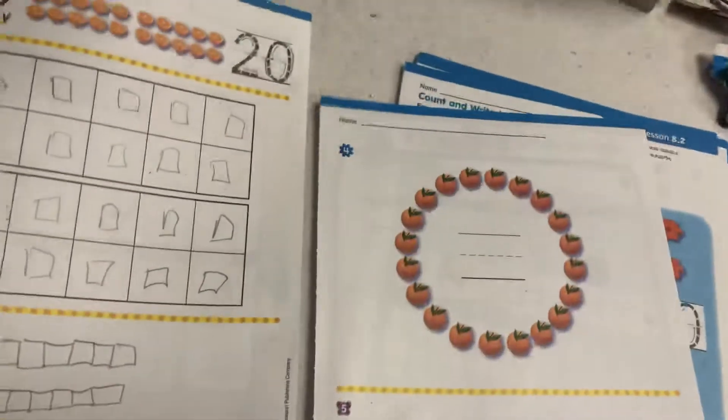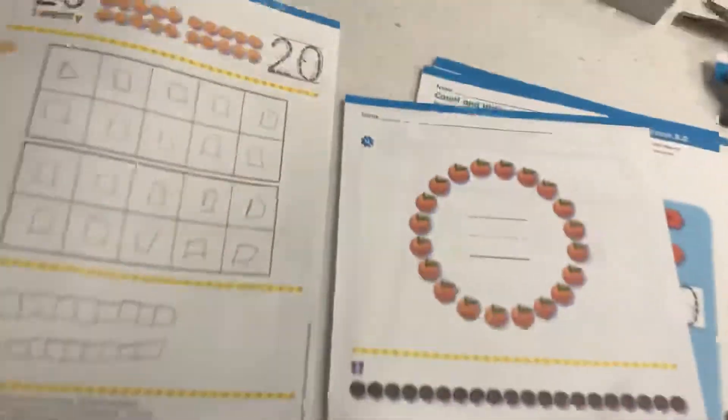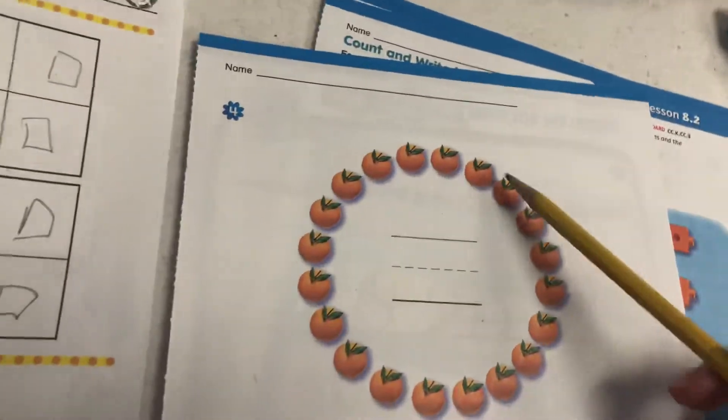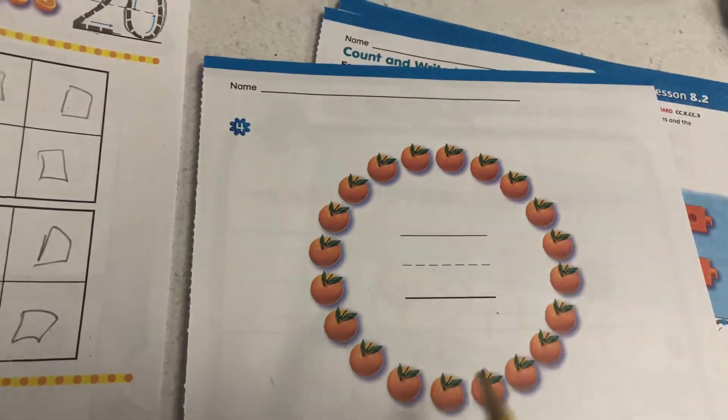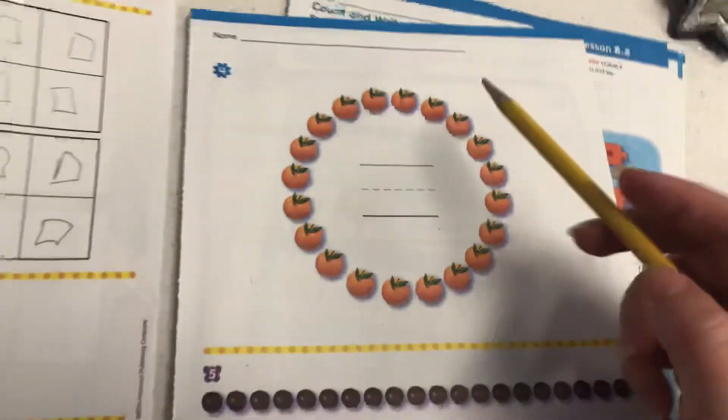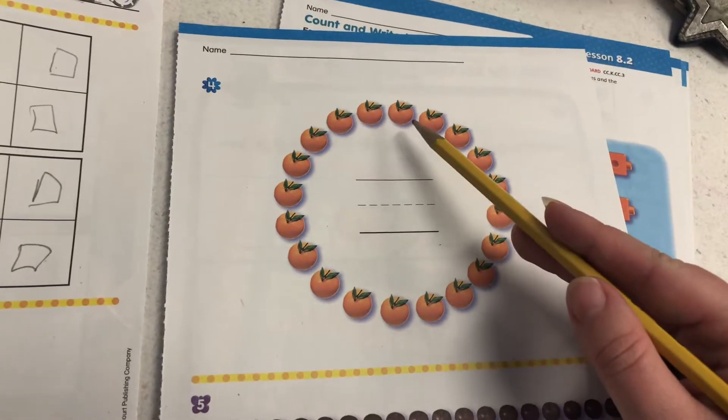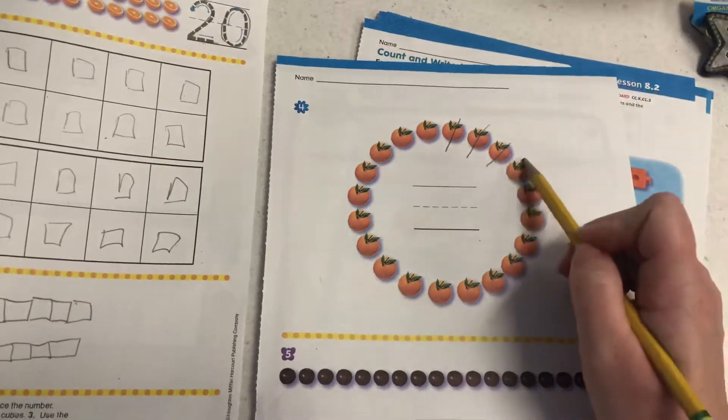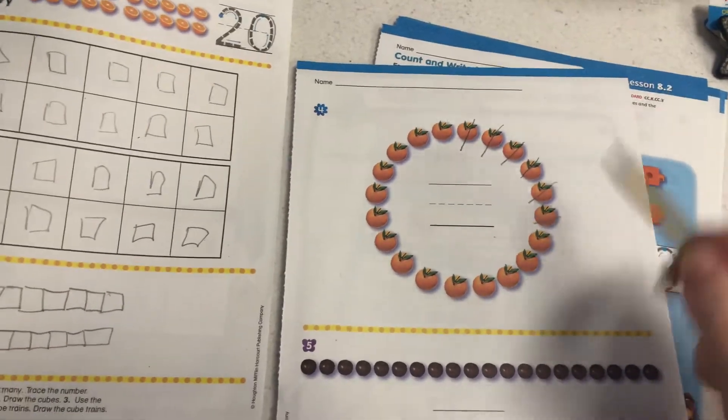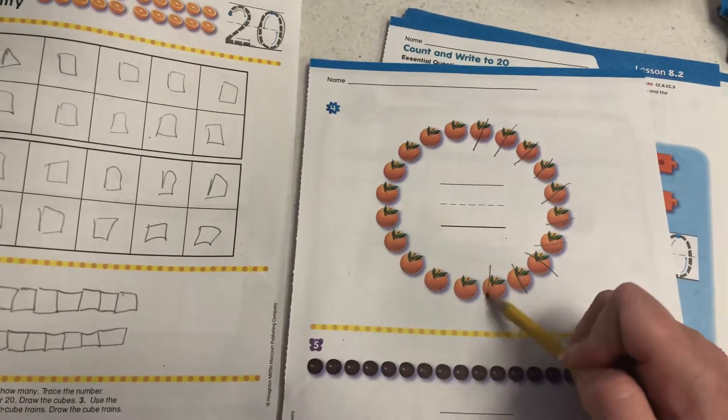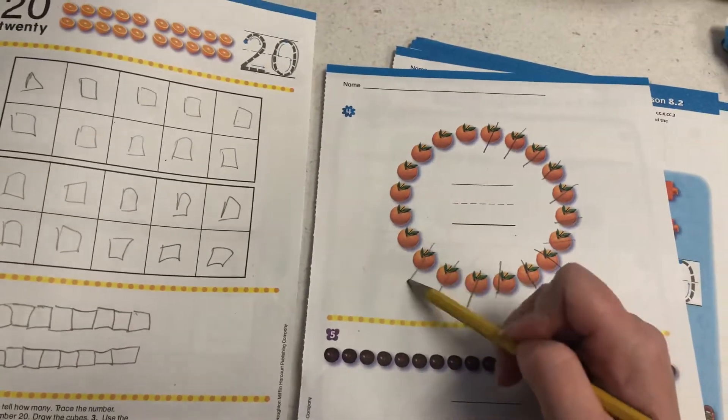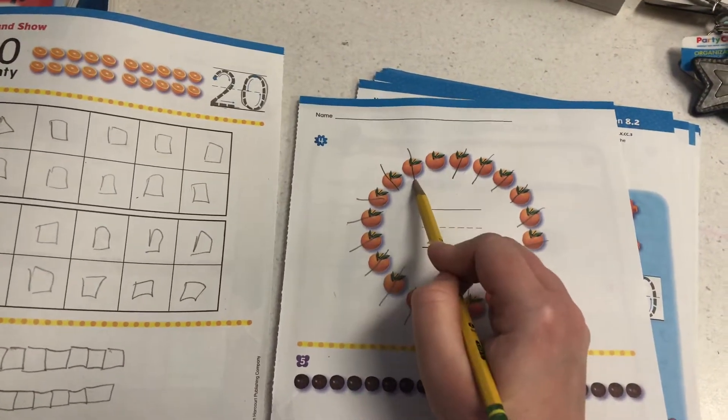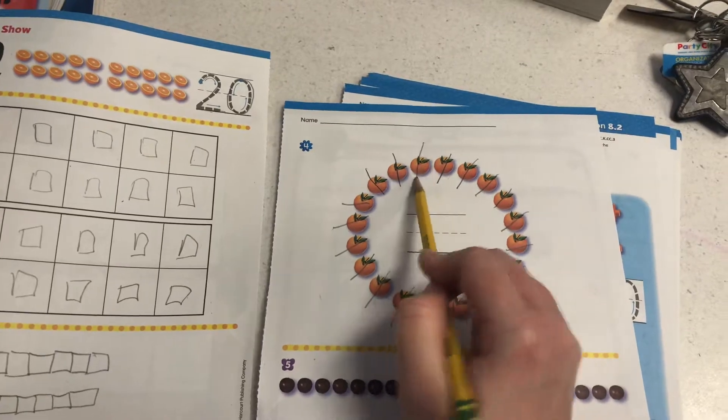On the next, we've got to count up these oranges. And I think these are apples. So when you have them in a circle, what's a really good idea is as you count, so you don't forget where you left off, you can cross off your orange that you've counted as you count. So here I go. One, two, three, four, five, six, seven, eight, nine, 10, 11, 12, 13, 14, 15, 16, 17, 18, 19, and 20.